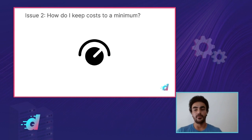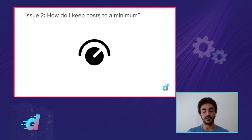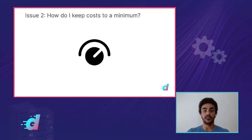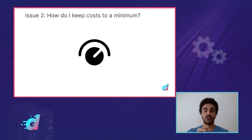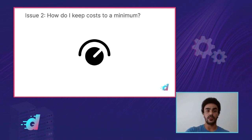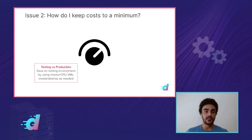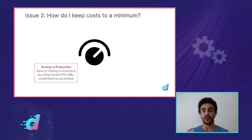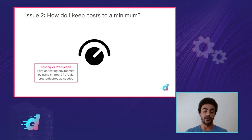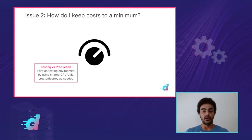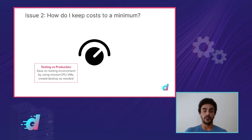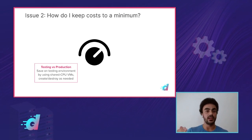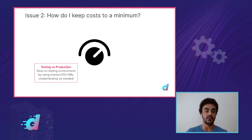Second is how do you keep your costs to a minimum? These are just a few areas I've identified — think of them as knobs you can turn to keep your costs high or low. First, think about your application: are you testing something, or is it going to be in production where customers will interact with it? If you're just testing, all you will need is a shared CPU VM, because you don't really care about peak performance. You just want something to test your idea — create, destroy — and shared CPUs work best for that.